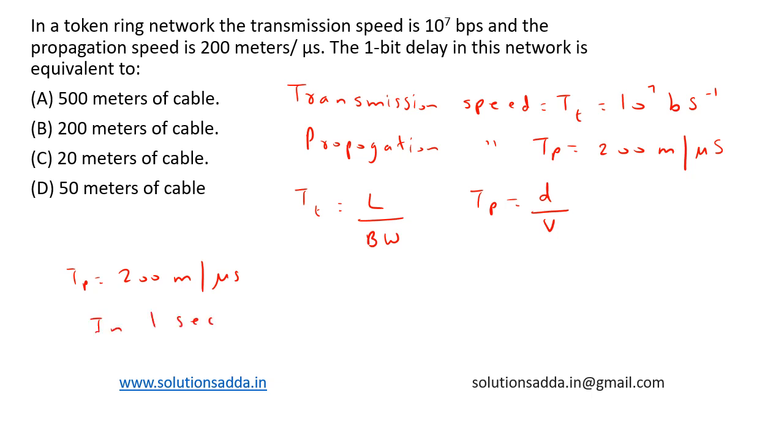Now since T_p is equal to 200 meters per microsecond, in one second distance covered is equal to 200 into 10 to the power of 6 meters, and one bit delay.